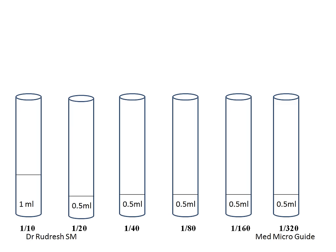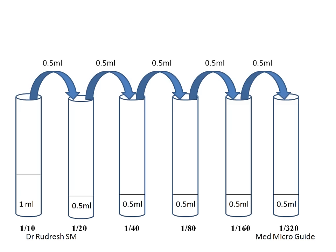To perform the Widal test, take 0.9 ml of saline in the first tube and 0.5 ml of normal saline in the rest of the tubes. Dilutions start from 1 in 20 to 1 in 160. To get a final dilution of 1 in 20, prepare an initial dilution of 1 in 10 in the first tube by adding 0.9 ml saline and 0.1 ml serum. Transfer 0.5 ml from the first tube into the next tube containing 0.5 ml saline, giving 1 in 20 dilution. Continue doubling dilutions through all tubes, preserving the last 0.5 ml for extended testing if required.